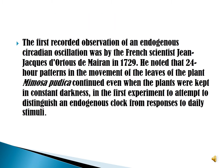The first recorded observation of an endogenous circadian oscillation was by the French scientist Jean-Jacques d'Ortous de Mairan in 1729. He noted that 24-hour patterns in the movement of the leaves of the plant Mimosa pudica continued even when the plants were kept in constant darkness, in the first experiment to attempt to distinguish an endogenous clock from responses to daily stimuli.